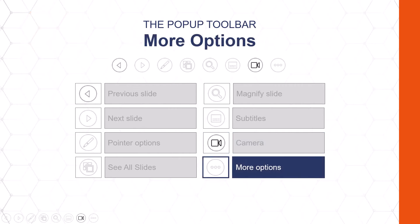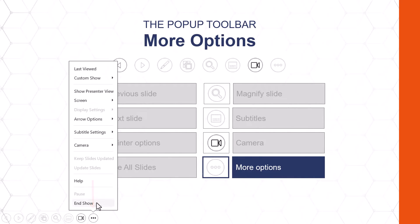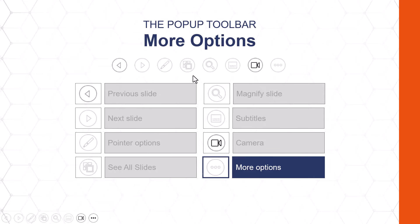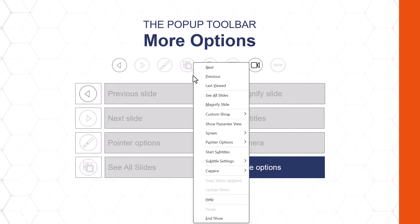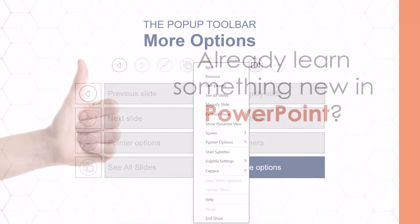Finally, we have the more commands option — the three little dots — which are all the backup features to end your slideshow, change your pointer options, etc. I don't usually come into these; I usually just use the pop-up toolbar commands as they are. You can always access these in the right-click menu in presentation view.